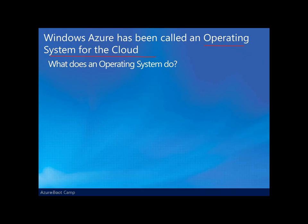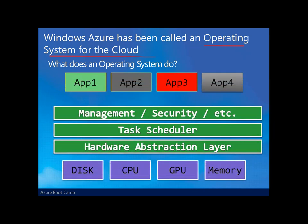An operating system like Windows 7 or Windows Vista on our desktop essentially helps abstract away the details of our hardware. For example, Windows 7 or Vista provides file management, security, task scheduling, and abstracting away all the details of access to memory, CPU, and disk. That's what an operating system does for us on our desktop.